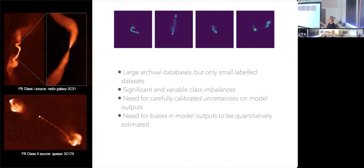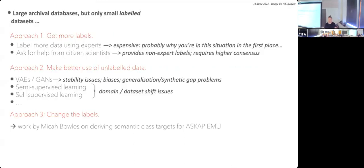So all of these are generic challenges for AI. I'm going to talk primarily today about the first one — how we deal with having lots of data but only small labeled data — because this is really something where the foundation model approach is probably the way forward.